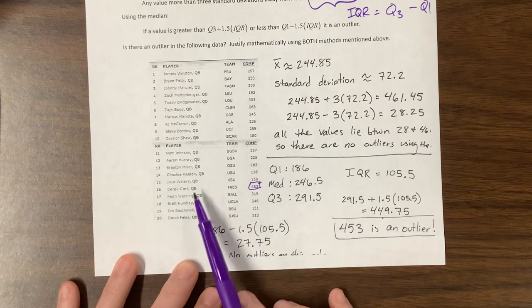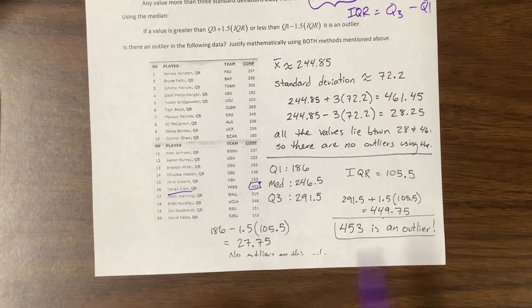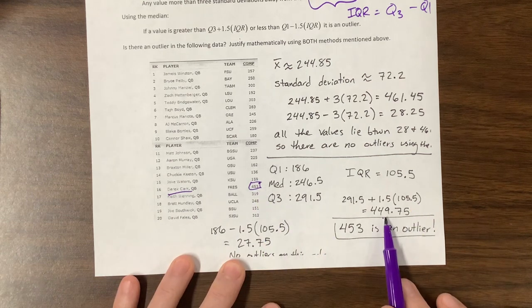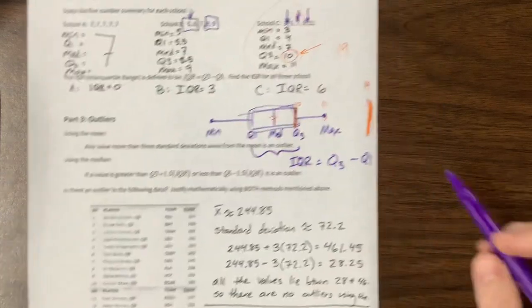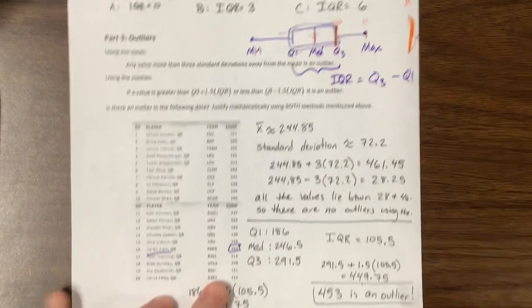And here, now this Derek Carr person, is he still playing? I don't know, I don't know enough about football, I'm sorry. Now his number is bigger than this boundary. So if you look back at this picture, he would have been somewhere out here or whatever, and so he would have counted as an outlier.